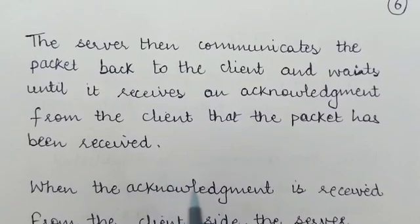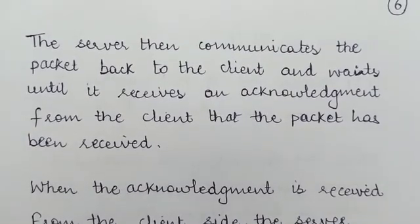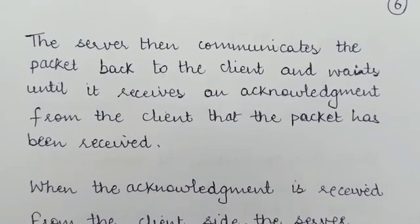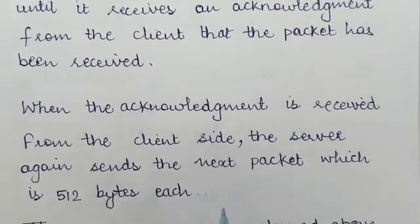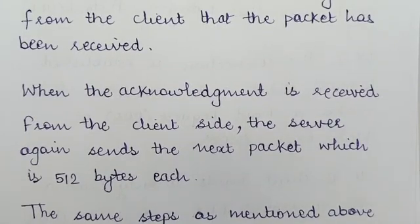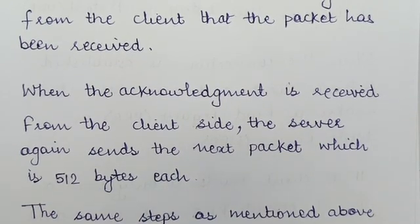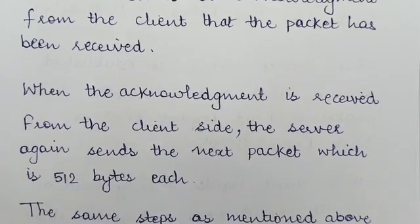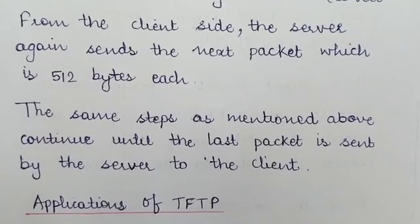If the client is requesting some data from the server, the server sends that data packet to the client and then waits for an acknowledgement from the client to confirm that it has received the data packet. When the acknowledgement is received from the client, the server again sends the next packet, which is also 512 bytes. After receiving acknowledgement for the first packet, the server knows it was received and sends the next data packet of 512 bytes, and so on until all data packets have been delivered.